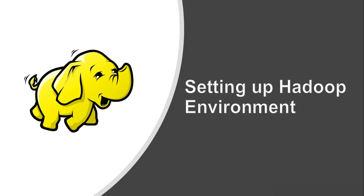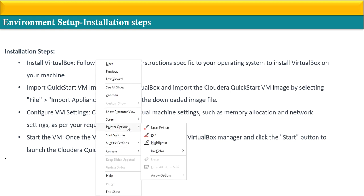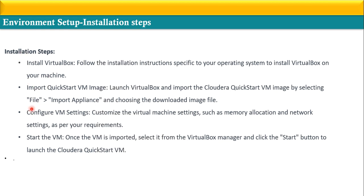To summarize, there are 4 steps only. First, install VirtualBox on your machine. Second, download the Cloudera Quickstart VM image. Third, import the Cloudera Quickstart VM into VirtualBox — as shown earlier. Fourth, do the configuration settings: give at least 2 cores and 8 GB of RAM. Then click Start and you will be able to see Cloudera Quickstart VM running. Once done, it takes a couple of minutes to configure.